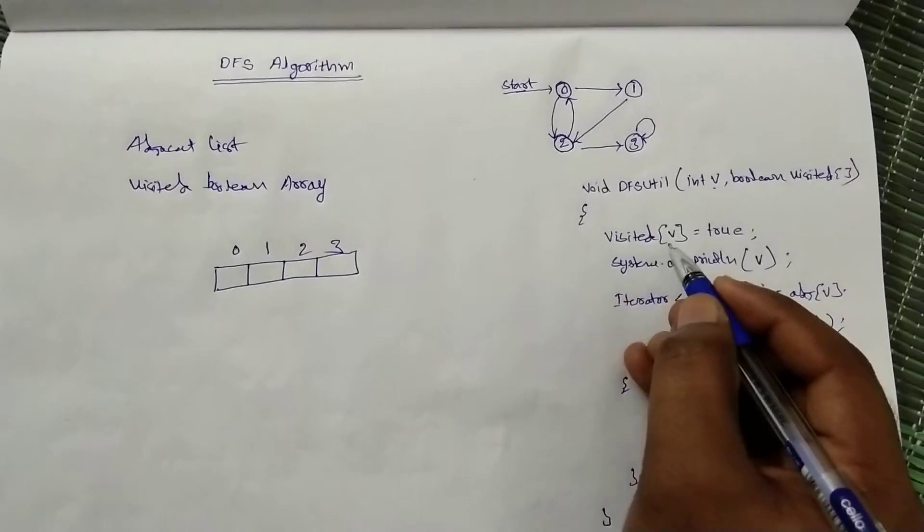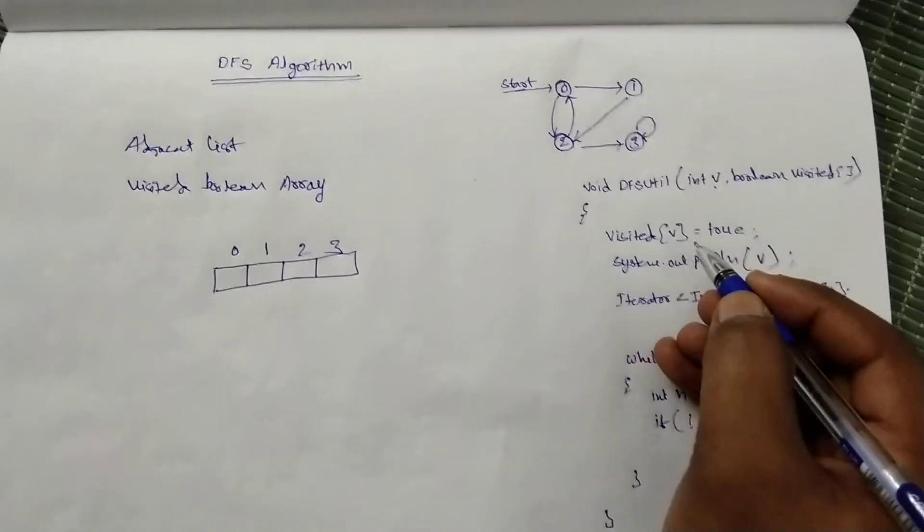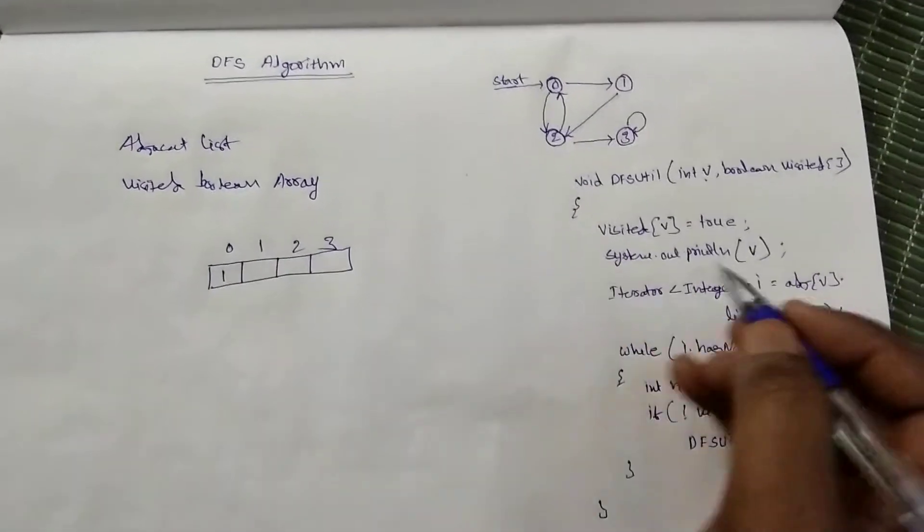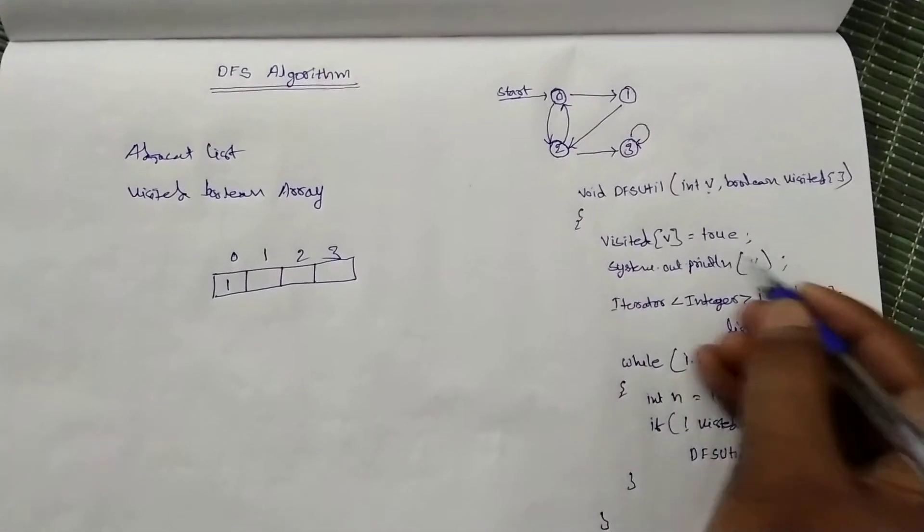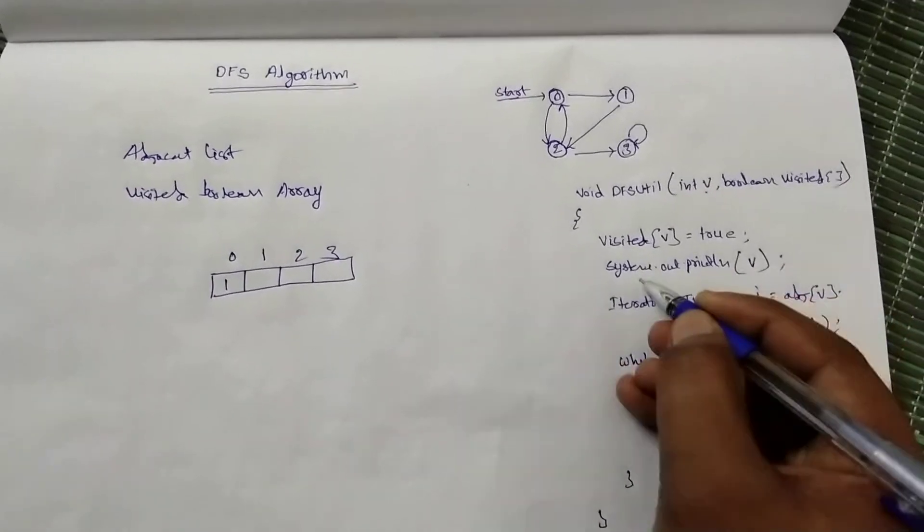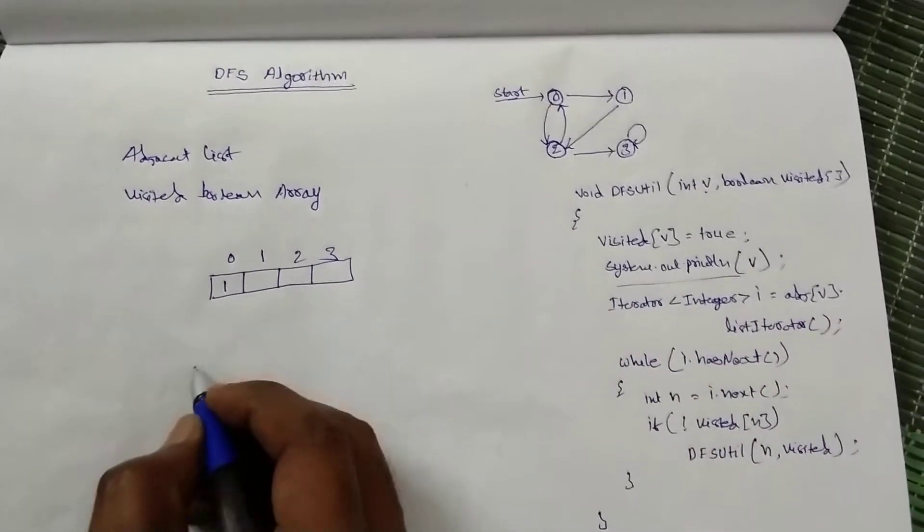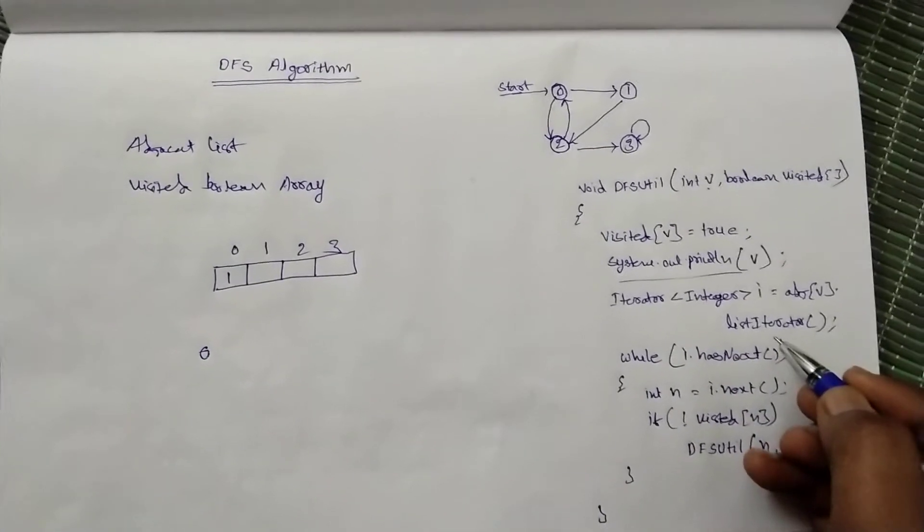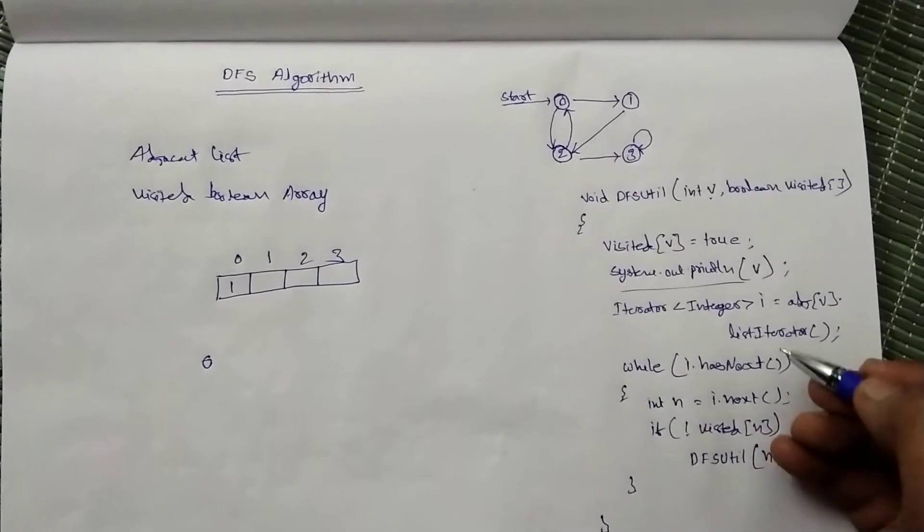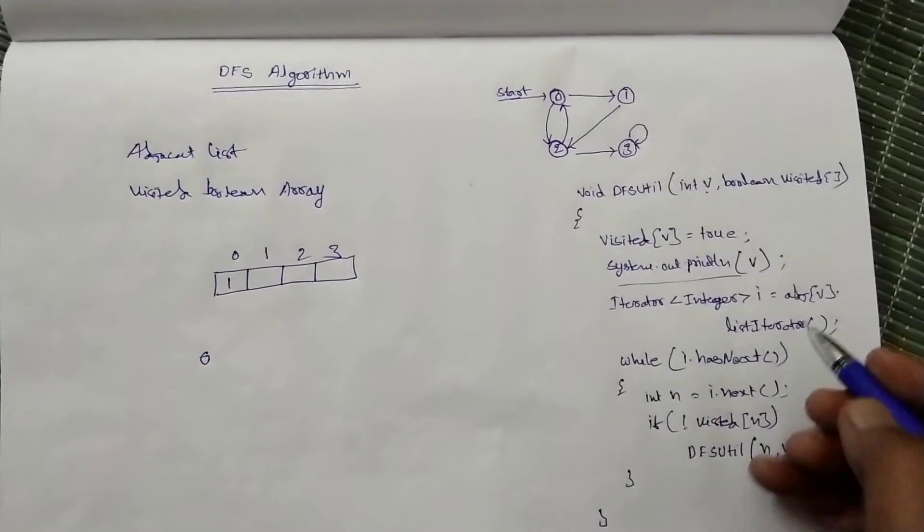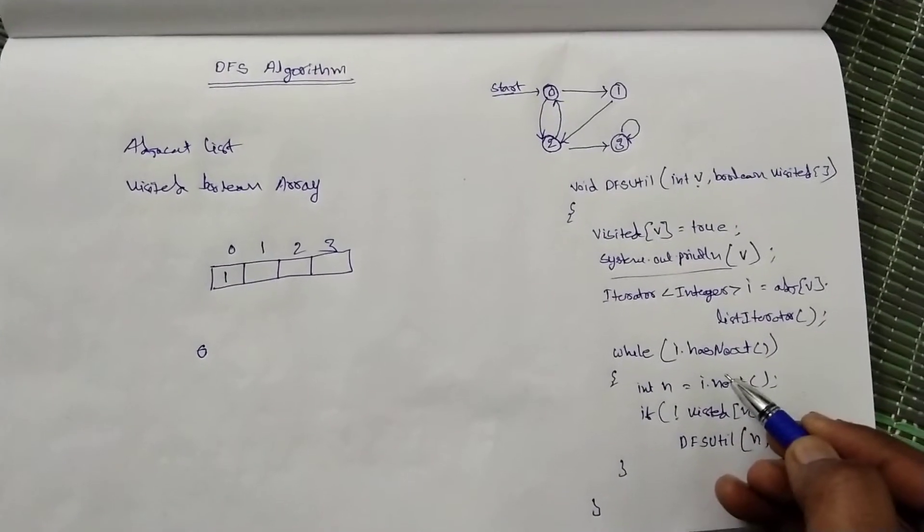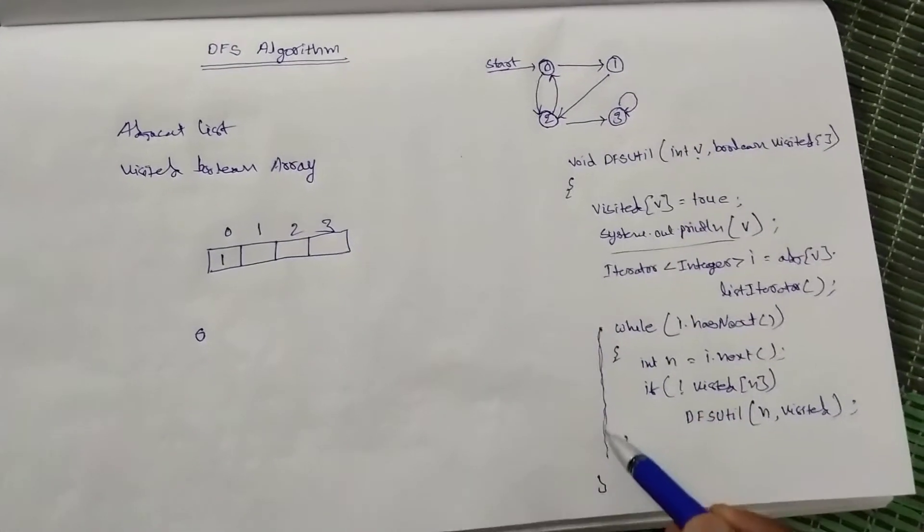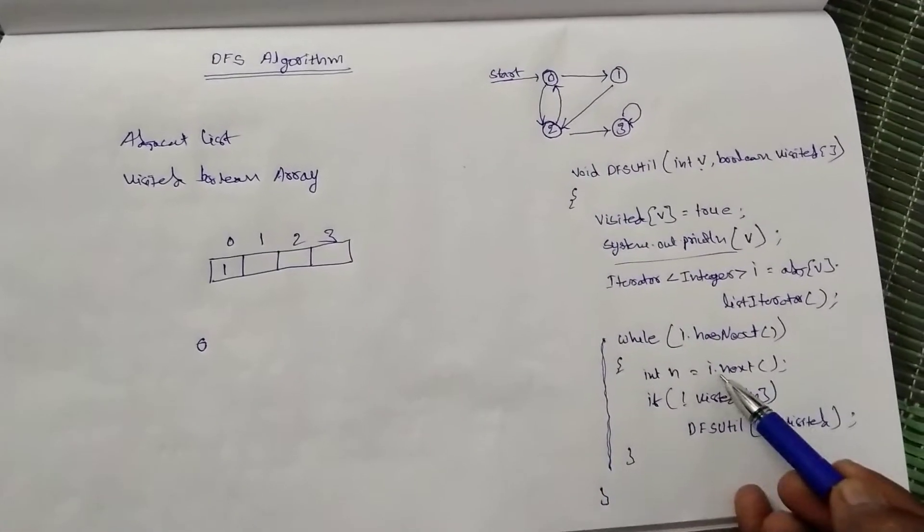Then as soon as we call this, we will mark this 0 as visited, that is true, and we will print or process anything, so we will print 0. Then in this step we will iterate all its adjacent nodes. This while loop gets all its adjacent nodes, so it will iterate i.next.